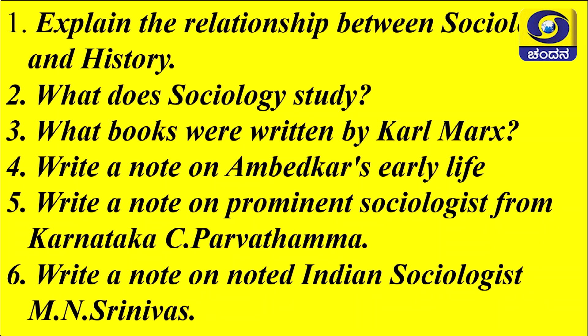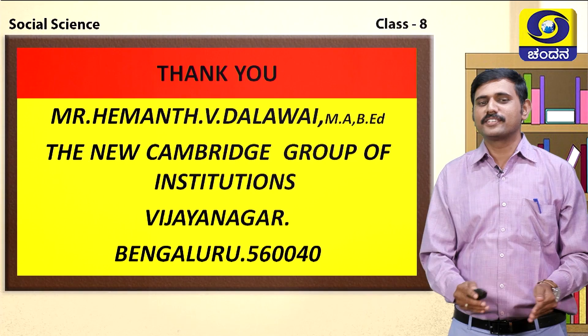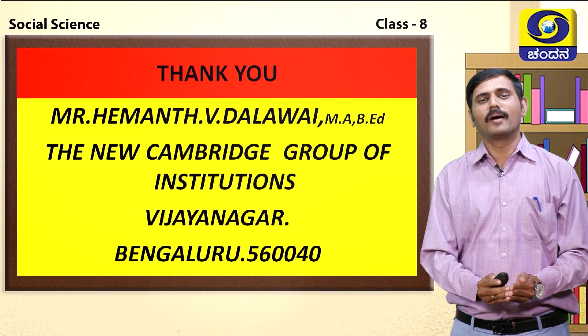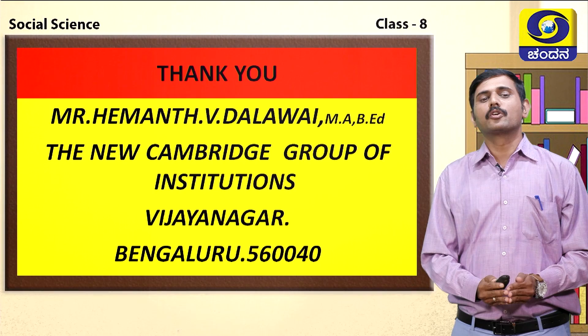A note on Ambedkar's early life: Dr. B.R. Ambedkar was born in Ambavadi village of Maharashtra in 1891. He lost his mother at the age of six and grew up under the care of his aunt Mirabai, starting his primary education at Satara and at the popular Elphinstone High School of Mumbai, passing matriculation with first class in 1907. He married Ramabai. With a scholarship of rupees 25 from the Maharaja, Ambedkar earned his BA and MA degrees and received his PhD from Columbia University in 1916. I am Mr. Hemant V. Dhalwai, working as a social science resource person for various institutions in Bengaluru and as assistant master for the New Cambridge Group of Institutions, Vijayanagara, Bengaluru. Thank you children.